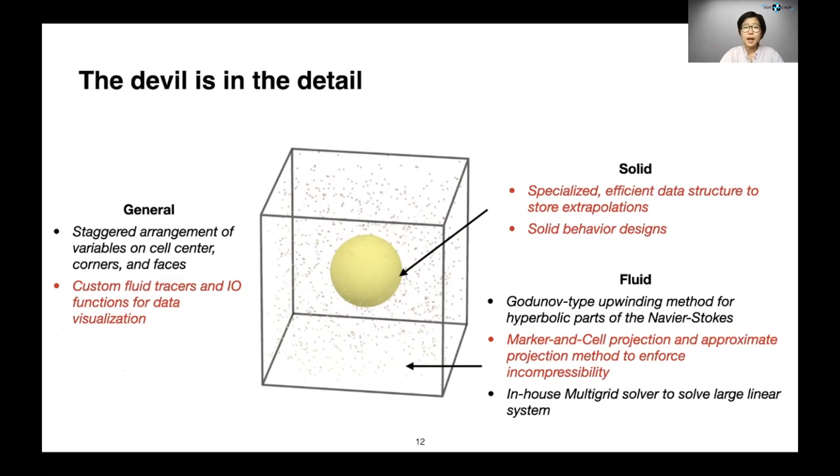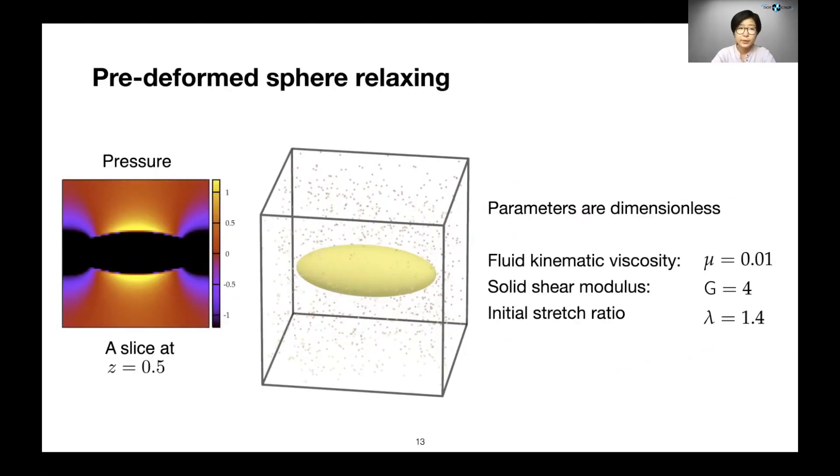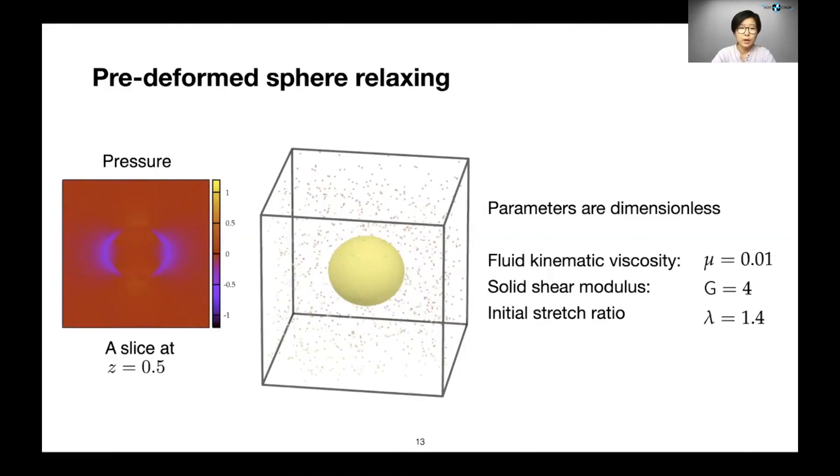Next, I want to show some of the example simulations in 3D. Here, you're seeing a sphere that's made out of a neo-Hookean material that's been stretched to a really large extent, relaxing in viscous fluid. On the left, you're seeing a slice of the pressure field in the middle of the domain.